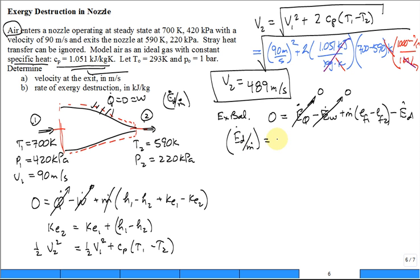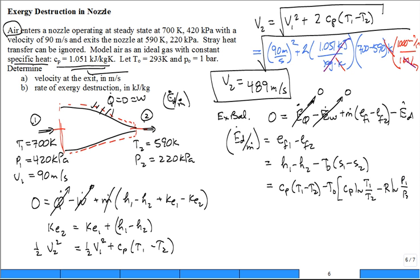So E-D divided by M-Dot. What we're asked to calculate is going to be the difference in the flow exergy out. No, it's flow exergy in, sorry. Minus the flow exergy out. Which is equal to H-1 minus H-2 minus T-naught S-1 minus S-2. If you want, you put C-sub-P T-1 minus T-naught. How about this S? C-sub-P natural log of T-1 over T-2 minus R natural log of P-1 over P-2. You have to know how to be able to calculate the change in entropy of an ideal gas when you have constant specific heats. So there you go on that. So this is E-D divided by M-Dot.